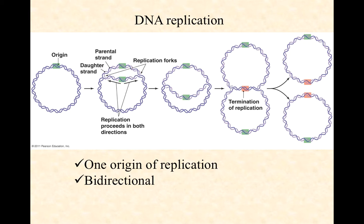A bacterial chromosome is typically a circular double-stranded DNA, and it has a sequence on it called an origin of replication. A bacterial chromosome typically has only one origin of replication. Proteins will open up the sequence at the origin of replication — meaning they melt apart the two strands — and that exposes the single-stranded regions for DNA polymerase and its associated proteins to begin creating new daughter strands.